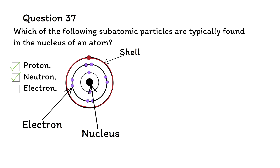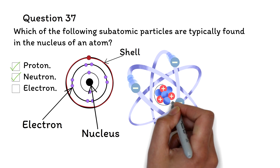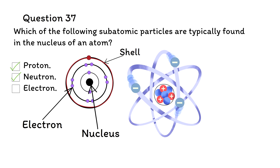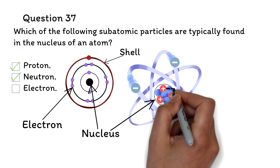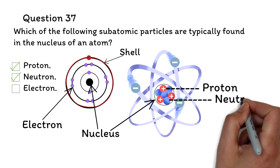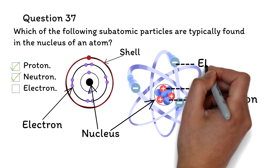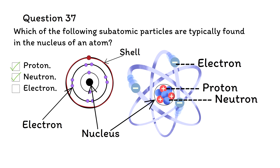In the previous question, we used a simple diagram to represent an atom because we only cared about the shells. This diagram is a better representation of an atom. Both protons and neutrons are typically found in the nucleus. Protons have a positive charge, while neutrons have no charge — they are neutral. Electrons are not found in the nucleus but orbit around it in energy levels or shells.